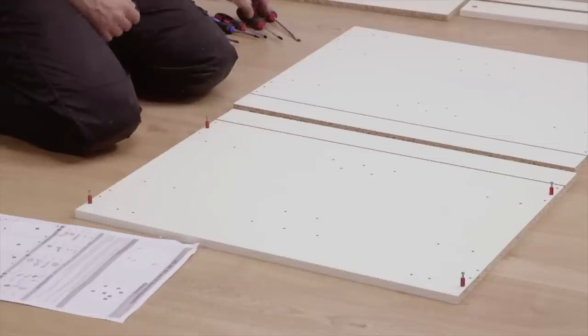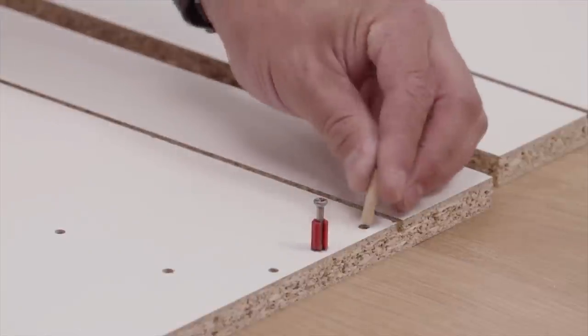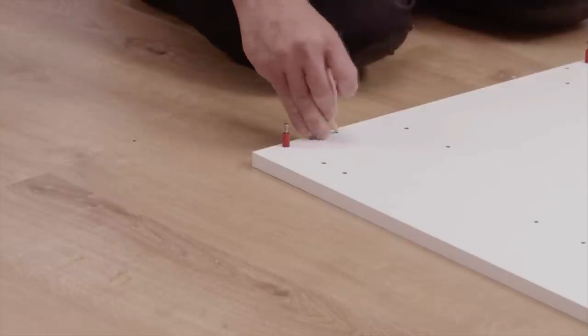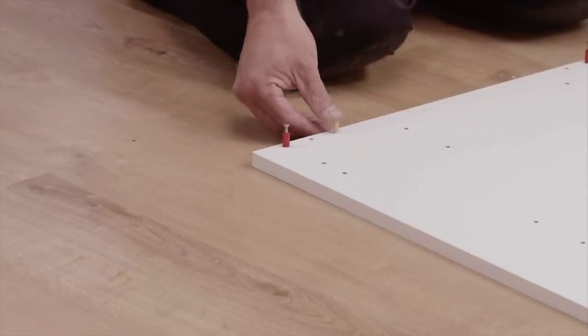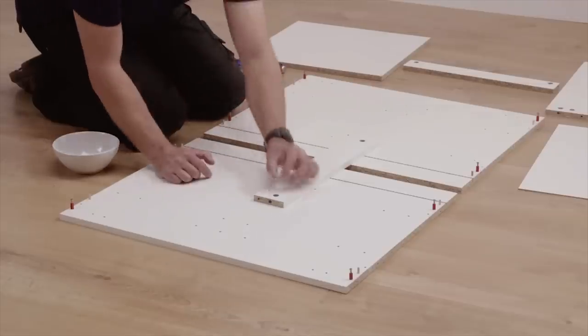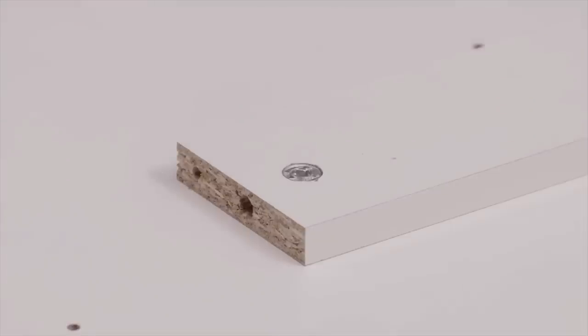Now, for extra strength, place the dowels into the side panel. Now, place the locking cams into the large holes in the top struts that will form the top of the cabinet.